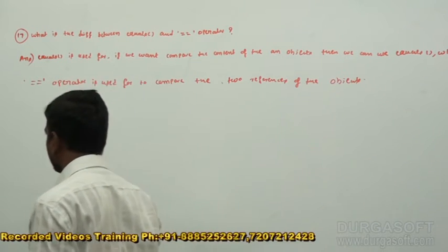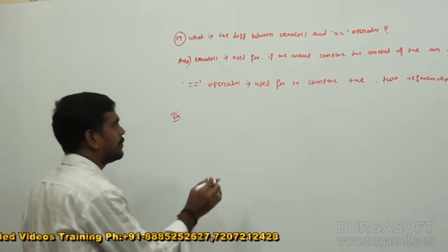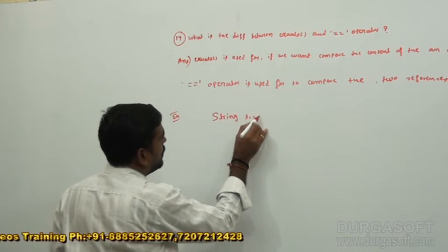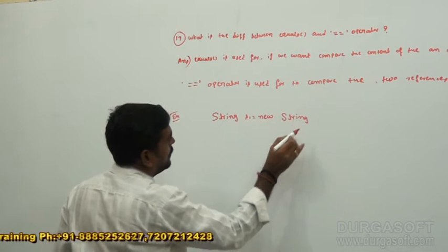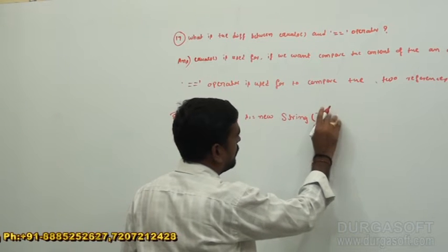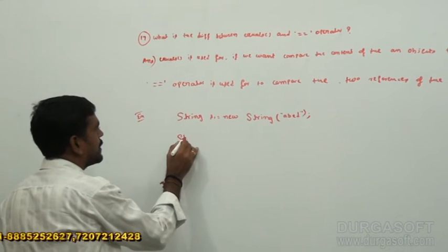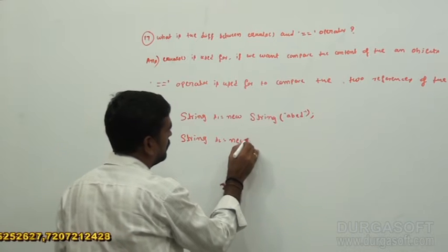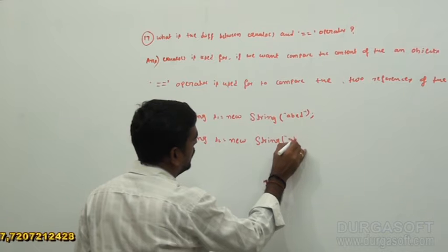For example, here I am going to take one small example. String S1 is equal to new String of ABCD. The next, String S2 is equal to new String of ABCD.